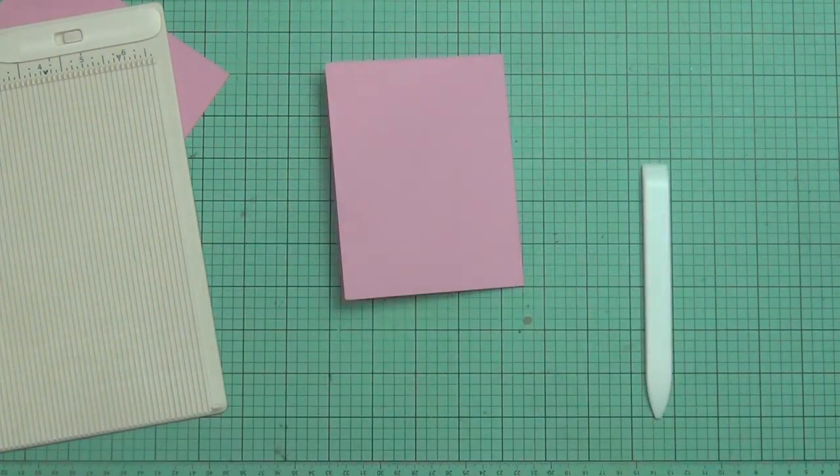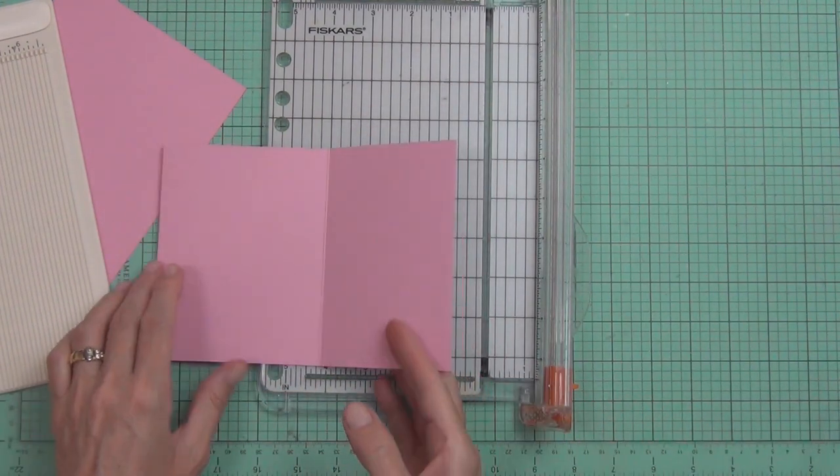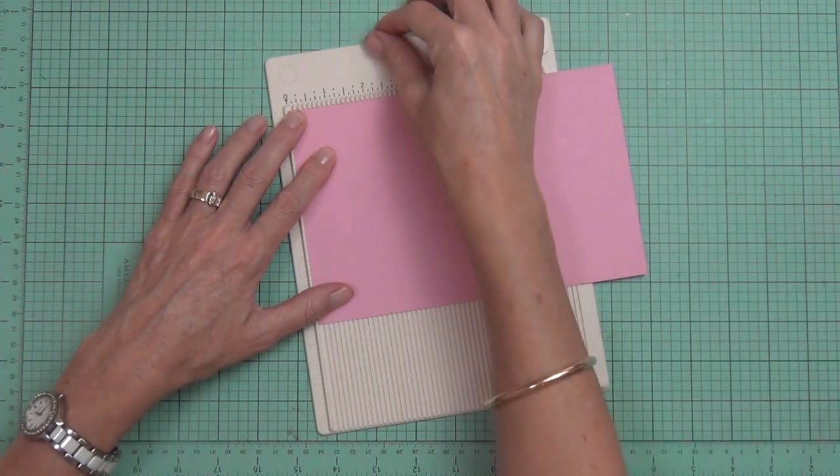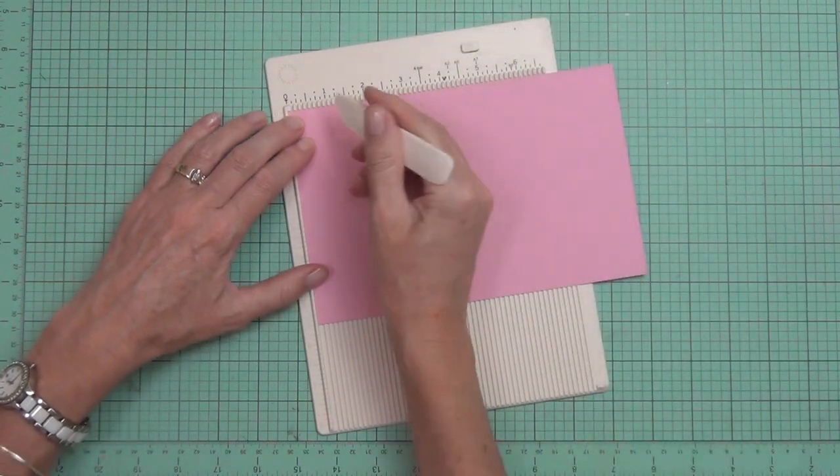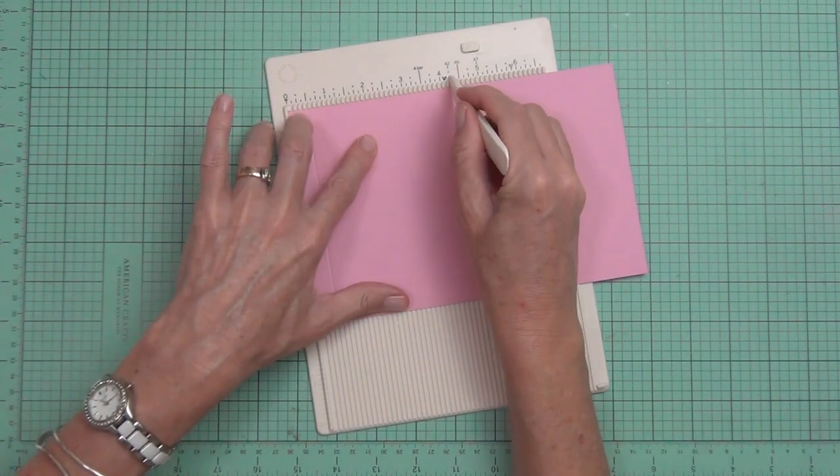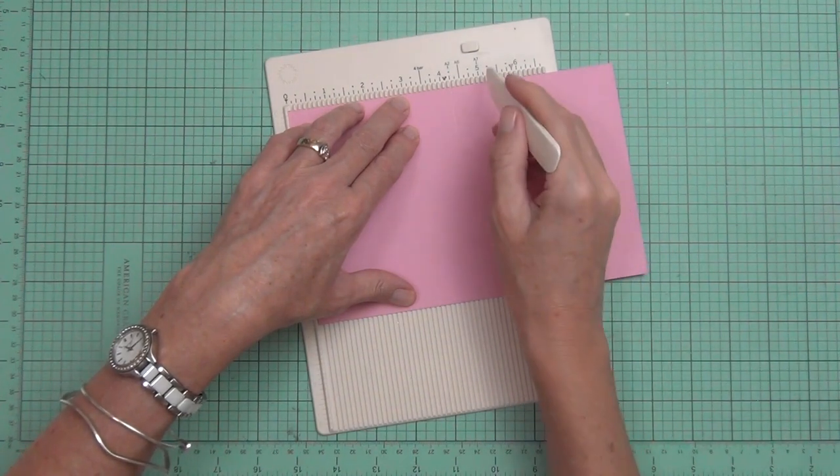Then what I've done is I've cut a half an inch off the back of the cardstock. On my second piece I've made three score lines at a half an inch, four and a quarter inches, and then four and three quarter inches.